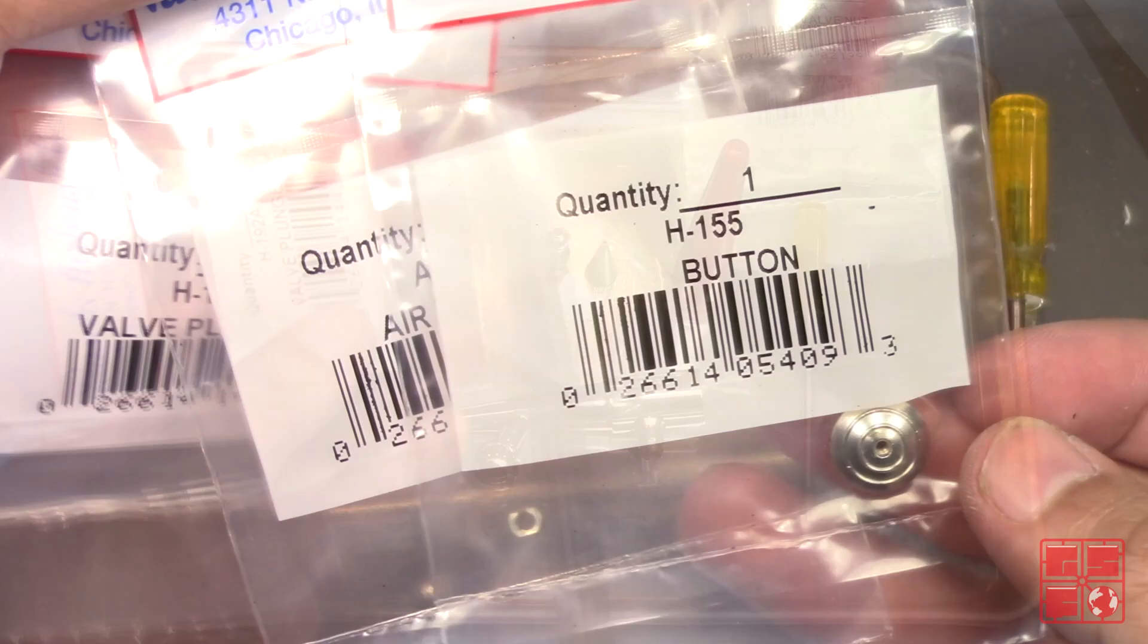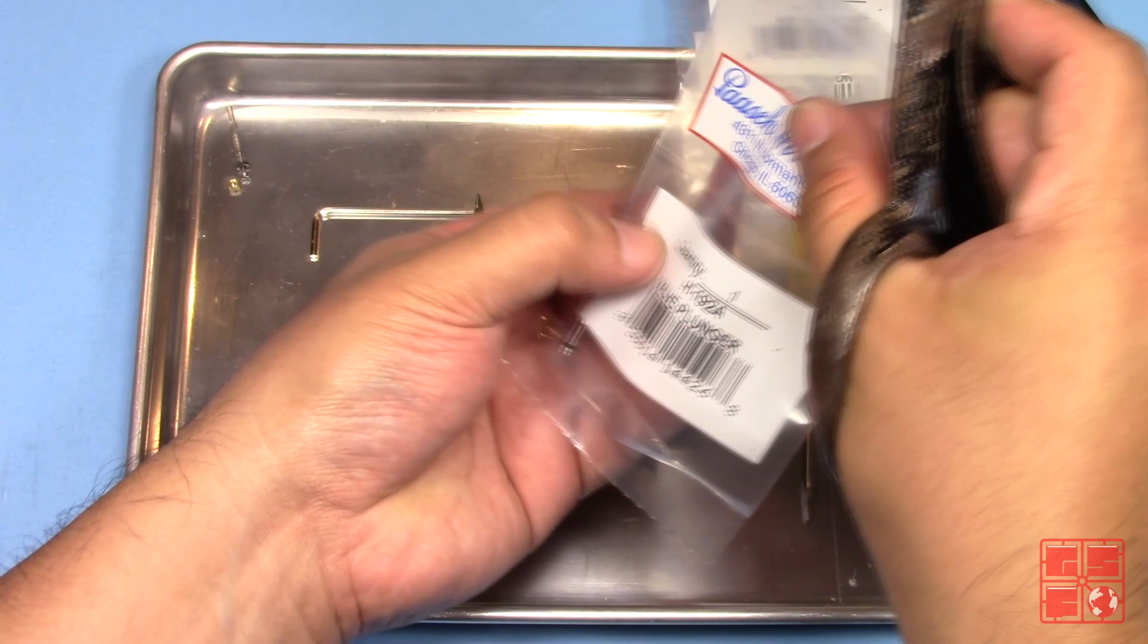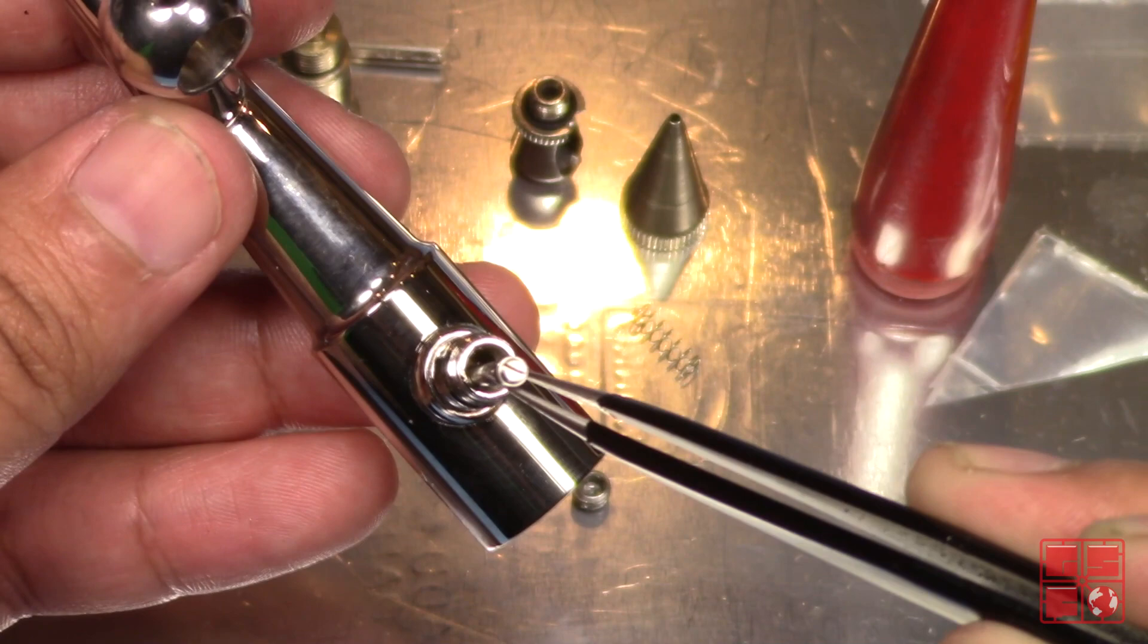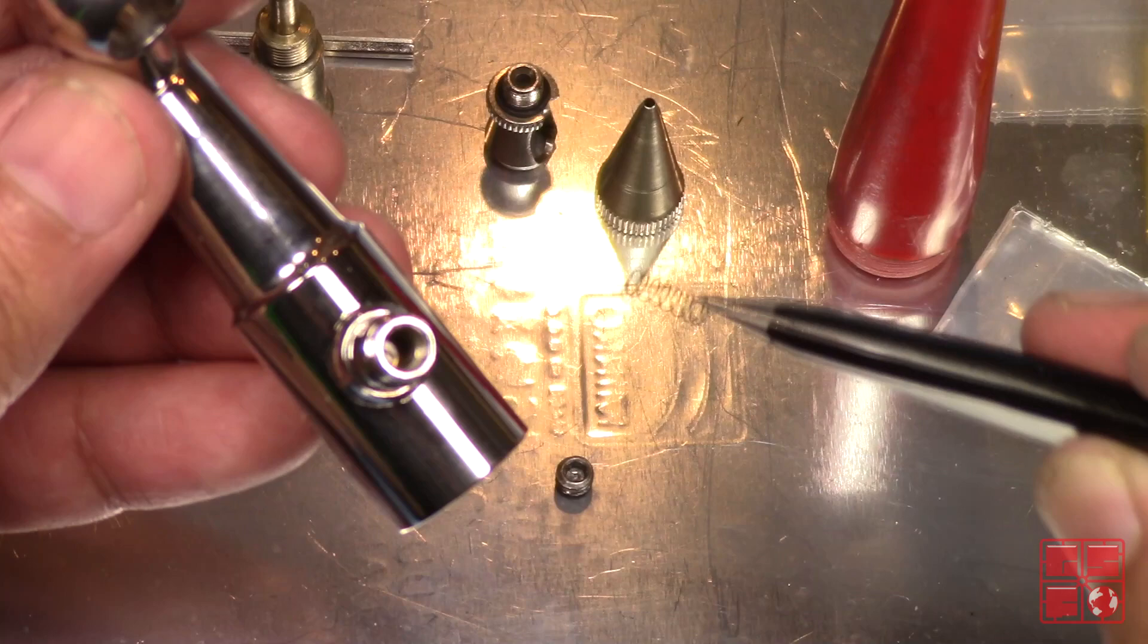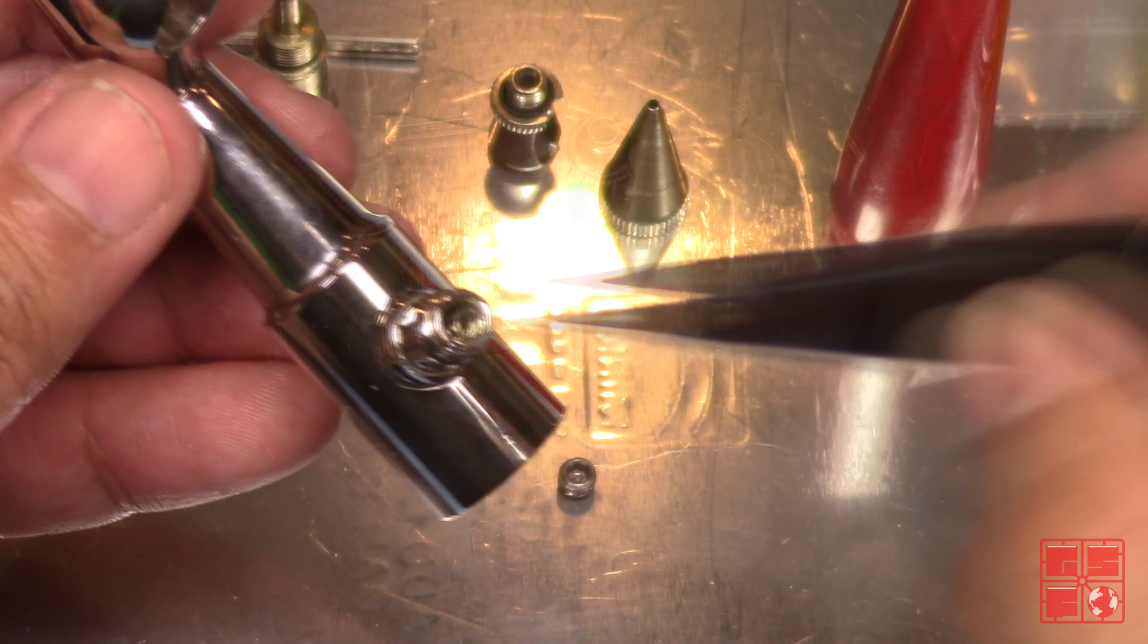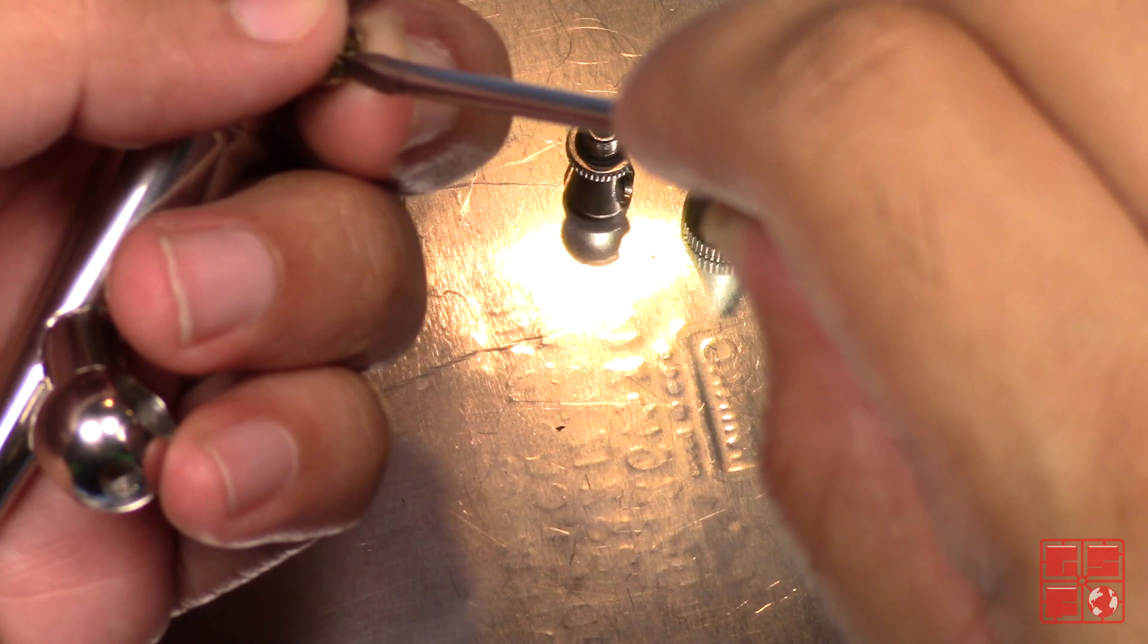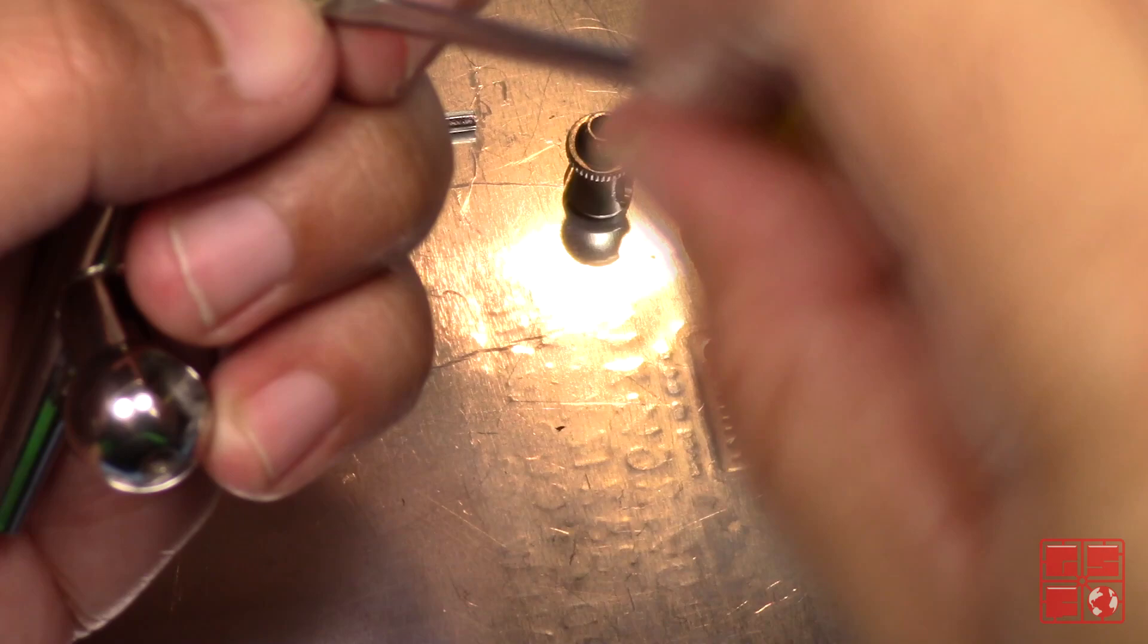Next I will be replacing the air valve and trigger button. I got a spare air valve nut as well, but I will be reusing the original. Notice that the valve plunger has a flat head screwdriver slot that's used to tighten the trigger button. First I insert the valve plunger, then the spring. Take care not to strip the air valve nut as it's made out of delicate brass, and it's somewhat tricky to get it to thread properly at the start.